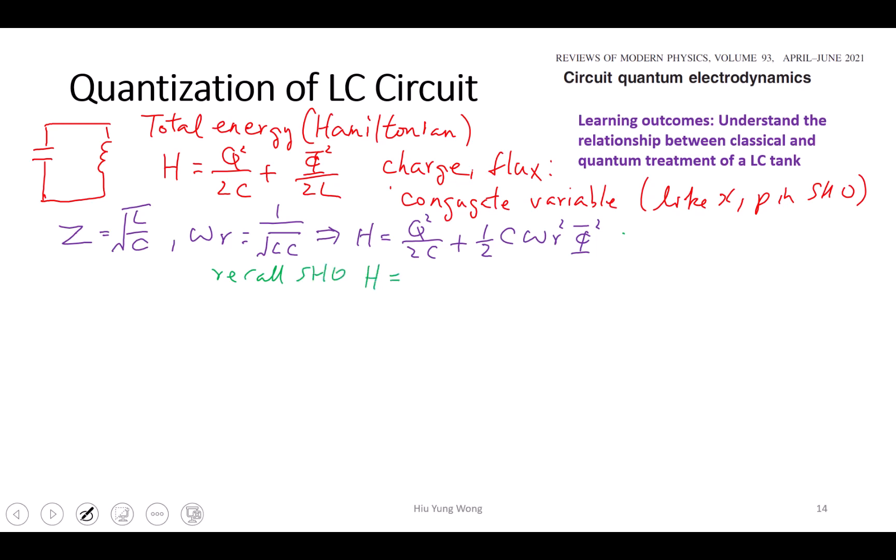Recall SHO. The Hamiltonian is P square over 2M plus one half M omega 0 square times X squared.